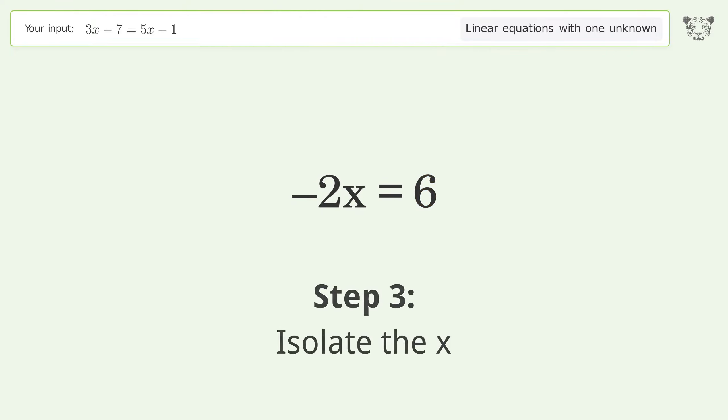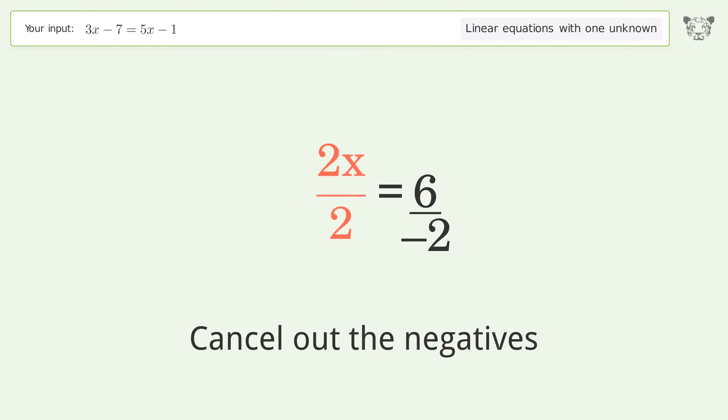Isolate the x. Divide both sides by negative 2. Cancel out the negatives. Simplify the fraction.